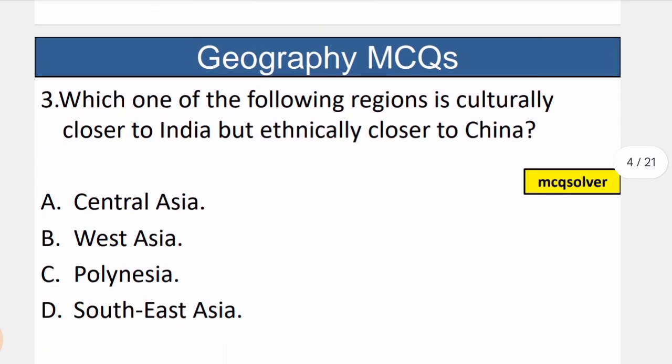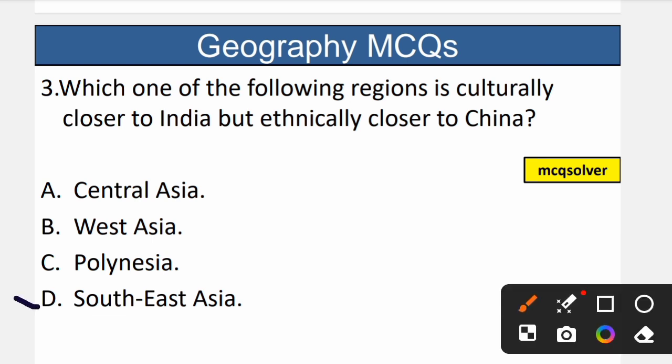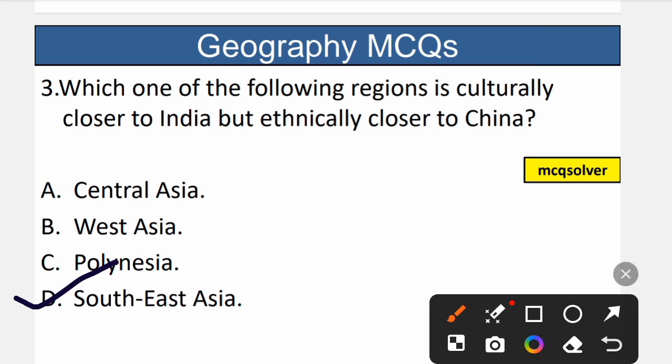Question number 3: Which region is culturally closer to India but ethnically closer to China? The correct option is D — South East Asia. Countries like Laos and Cambodia are culturally closer to India; for example, Cambodia has Hindu temples, and deities are worshipped in Indonesia as well. But ethnically they are closer to China. So D is the correct option.